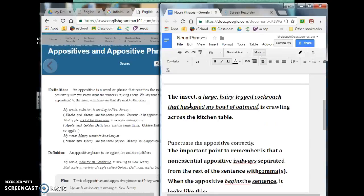If you take out the appositive, the rest of the sentence should make sense. So, the insect is crawling across the kitchen table is the basic sentence. If I didn't identify the entire appositive, if I had the insect bowl of oatmeal is crawling across the kitchen table, that actually gets confusing. Or if I left in the insect, a large hairy legged is crawling across the kitchen table. It wouldn't make sense.